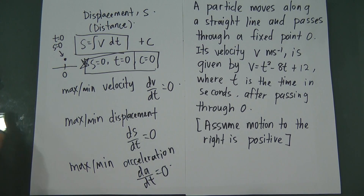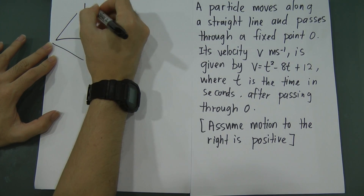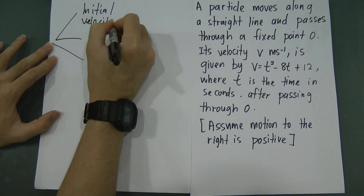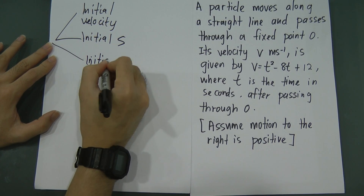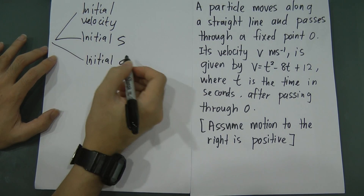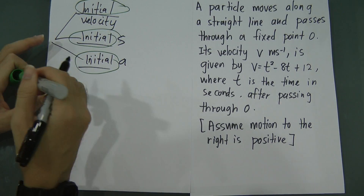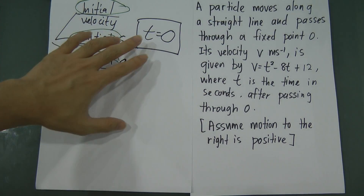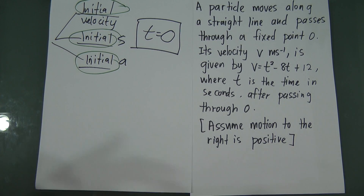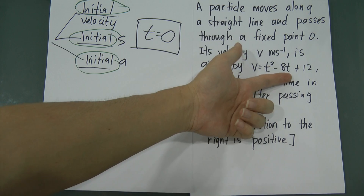If asked about maximum or minimum acceleration, differentiate acceleration with respect to time and set it equal to zero. This is basic but very important information. One more very important thing: whenever you see the word 'initial' in the question — such as initial velocity, initial displacement, or initial acceleration — it means you substitute t equals to zero.